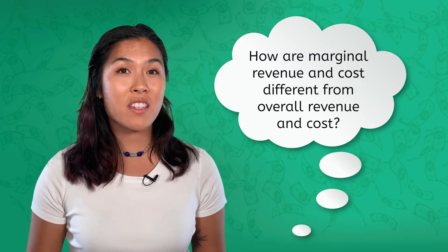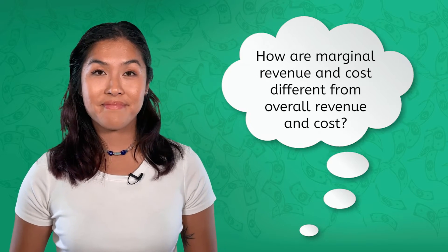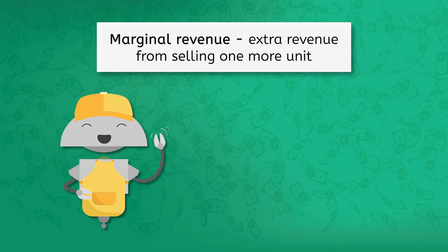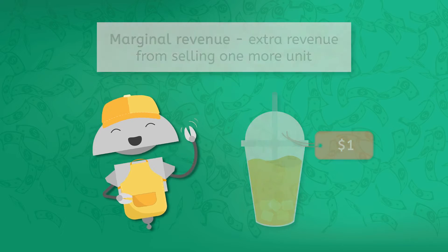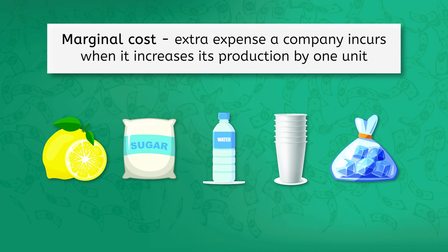How are marginal revenue and cost different from overall revenue and cost? Marginal revenue is the extra revenue you'd get from selling one more unit of a product. So after Mia has sold fifty cups, how much more revenue could she make by selling the fifty-first cup? Marginal cost is the extra expense a company incurs when it increases its production by one unit — in Mia's case, the cost of making that fifty-first cup.